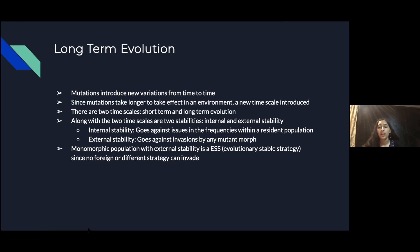Mutations introduce new variations from time to time, introducing the concept of long-term evolution. Since mutations take longer to take effect into an environment, a new timescale is introduced. When you look at evolutionary game theory, there's two timescales, short-term and long-term evolution. Along with these two timescales are two stabilities, internal and external. Internal stability is when it goes against issues in the frequencies within a resident population, and external stability is when it goes against invasions by a mutant morph. In a monomorphic population with external stability, it is considered an ESS, which is the evolutionary stable strategy, since no foreign or different strategy can invade in that situation.